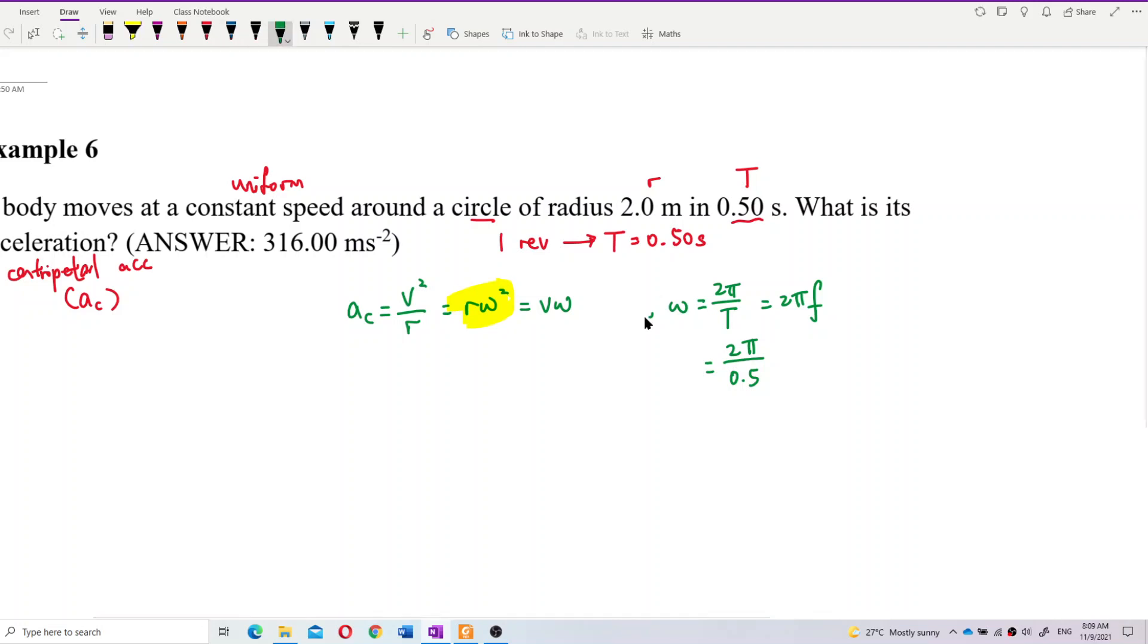So let's continue. So AC equal to R. What's the R? R is 2 meter. And omega is 2 pi over 0.5. That's it. So let's calculate.